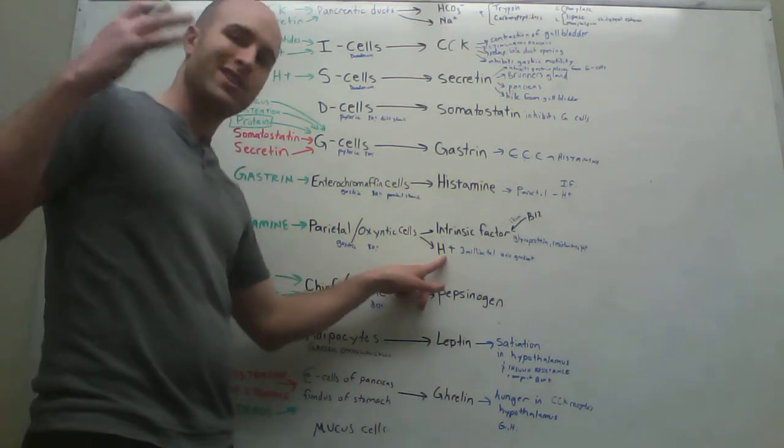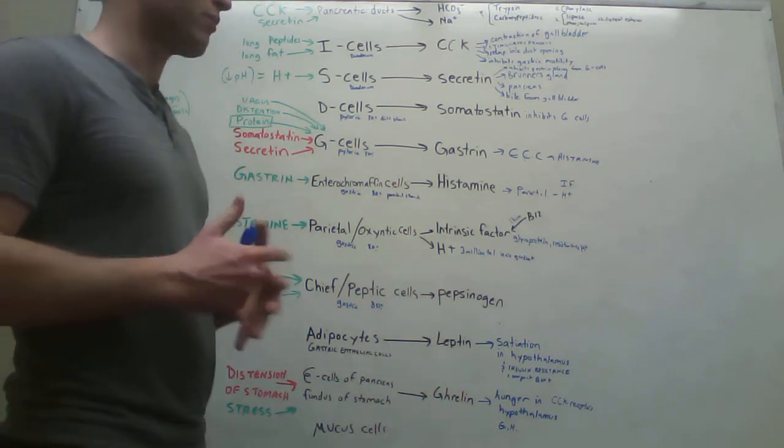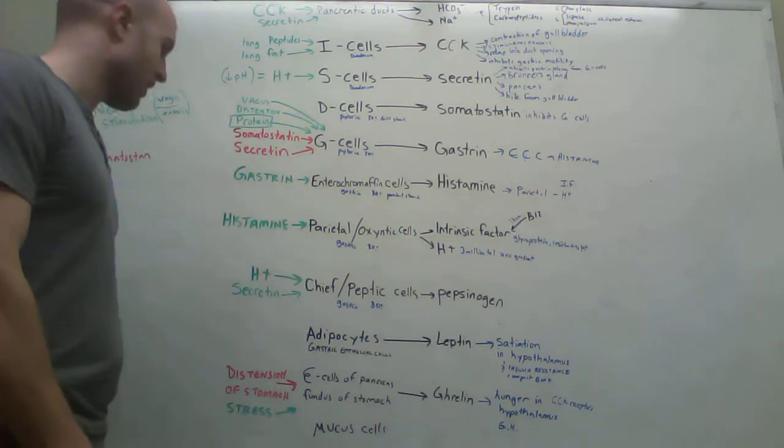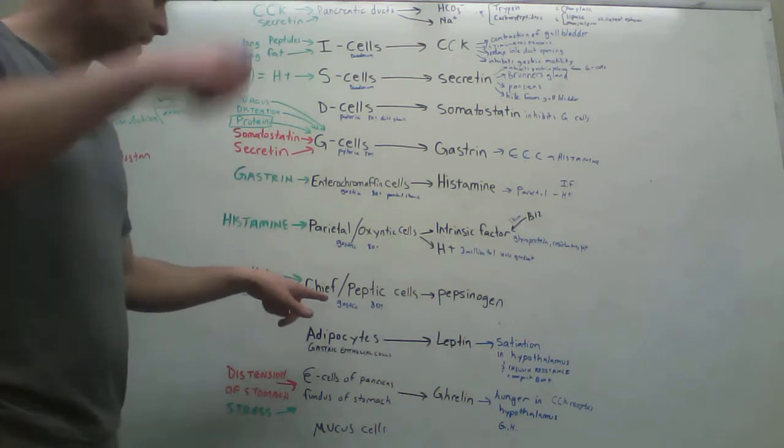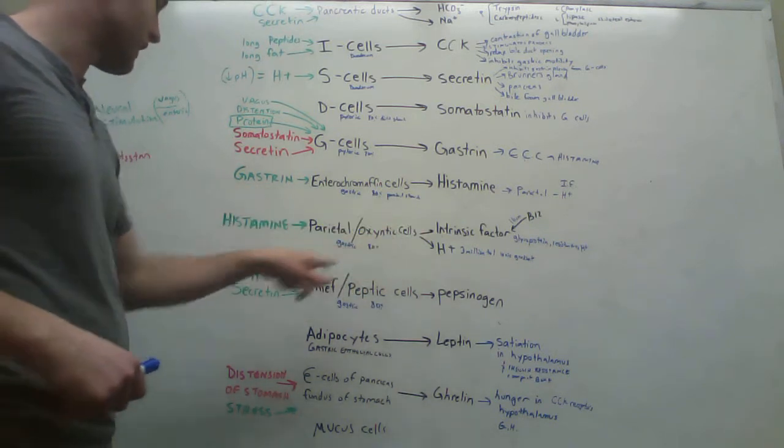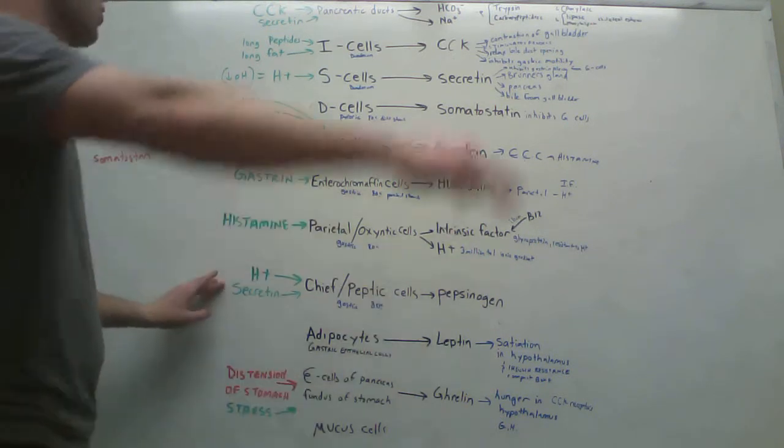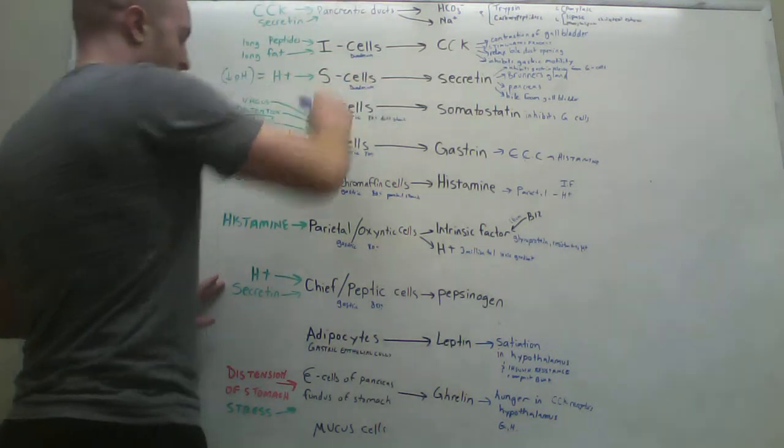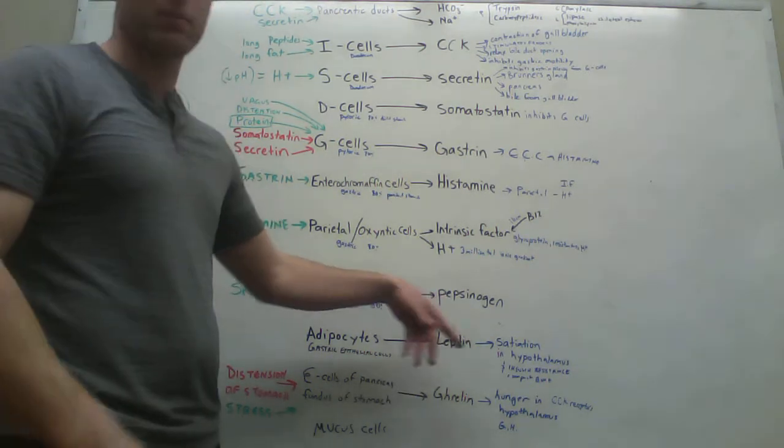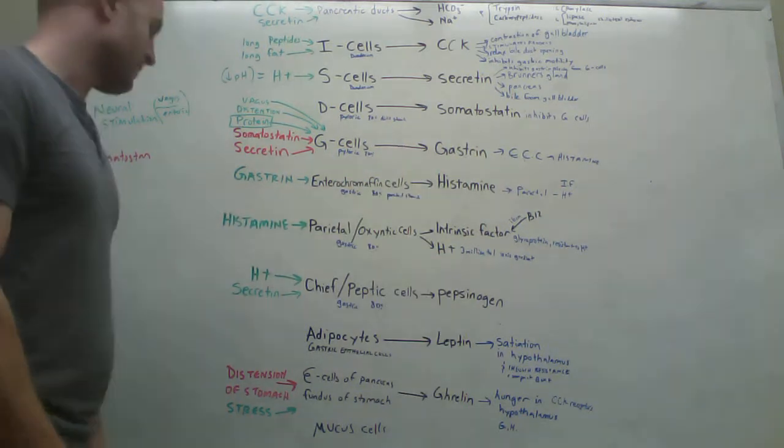So this hydrogen that it releases, apparently parietal cells are insanely good at releasing hydrogen. It has an ionic gradient of 3 million to 1, which is incredible. So going back down here to these, so that's the parietal oxyntic cells. This hydrogen, the hydrogen stimulates these chief or peptic cells. Well, also secretin, which came from here, also stimulates these chief peptic cells to release pepsinogen, pepsinogen breaks down to pepsin and then pepsin breaks down proteins.